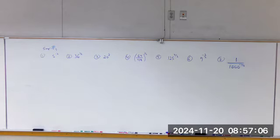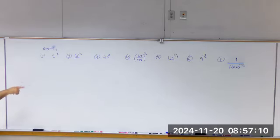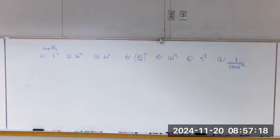Number four: if you have a fraction to a power — like we have over there — a over b to the m power, then the numerator and the denominator both get raised to the m power: a to the m over b to the m.